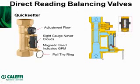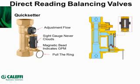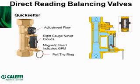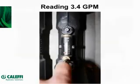Looking at the quick setter cross-section, a small bypass loop is normally closed. When the contractor pulls the pin, a venturi induces flow through the bypass loop past a magnetic disc attached to a spring, which is attracted to a ferrous bead. The bead rides up to indicate flow rate in gallons per minute. If you pulled the pin and had 6 GPM but wanted 4, you simply adjust the knob until the bead drops to 4 — setting your flow rate within seconds, without any instrumentation. The example shown indicates about 3.4 GPM.